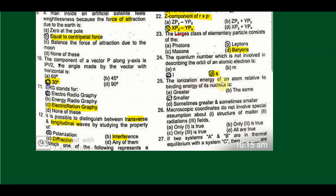The ionization energy of an atom relative to binding energy of its nucleus is smaller. Ionization energy of atom involves Coulomb forces, while binding energy involves nuclear forces. And nuclear forces are hundred times stronger than Coulomb forces. Therefore, ionization energy will be smaller as compared to the binding energy of the nucleus.